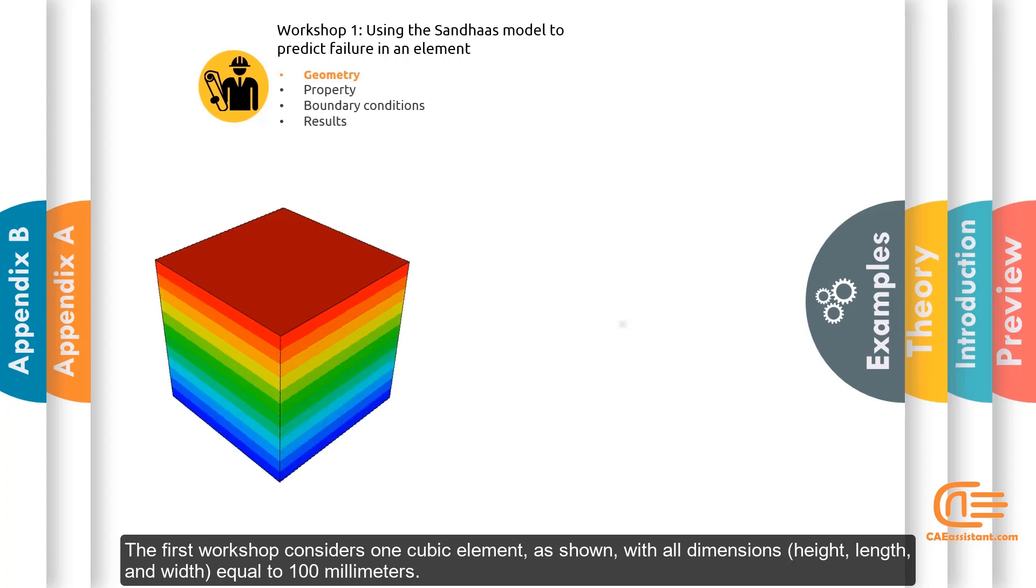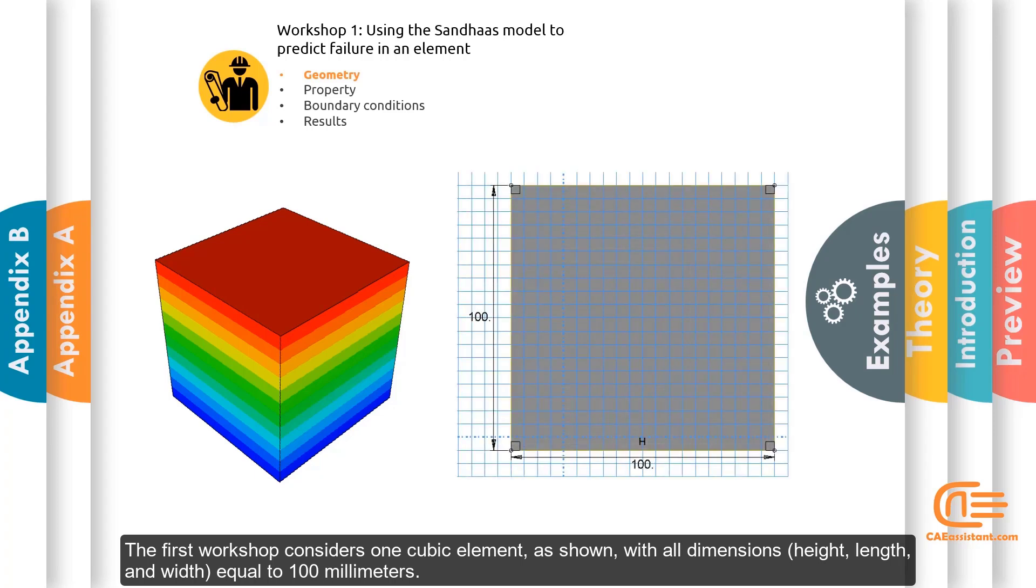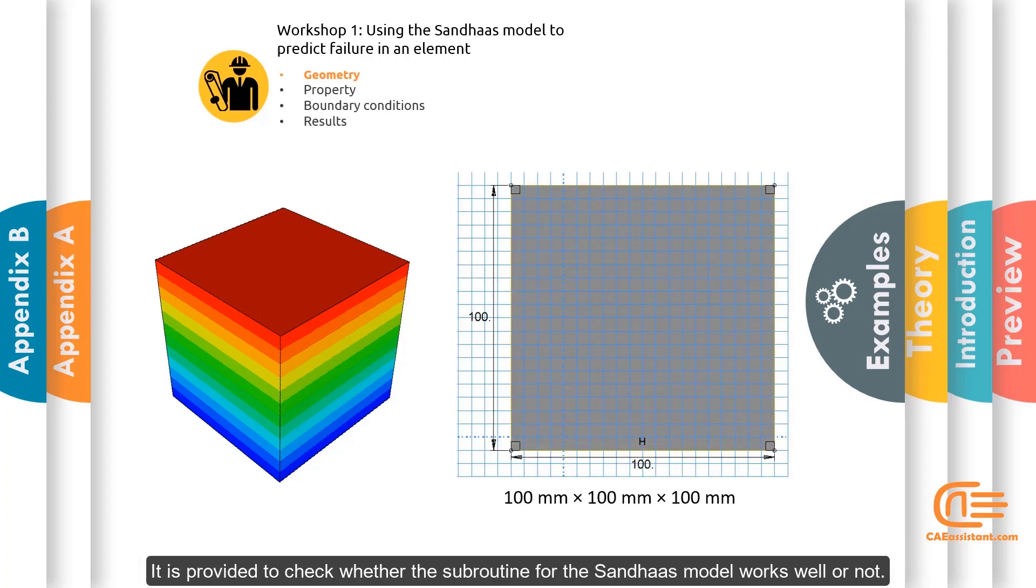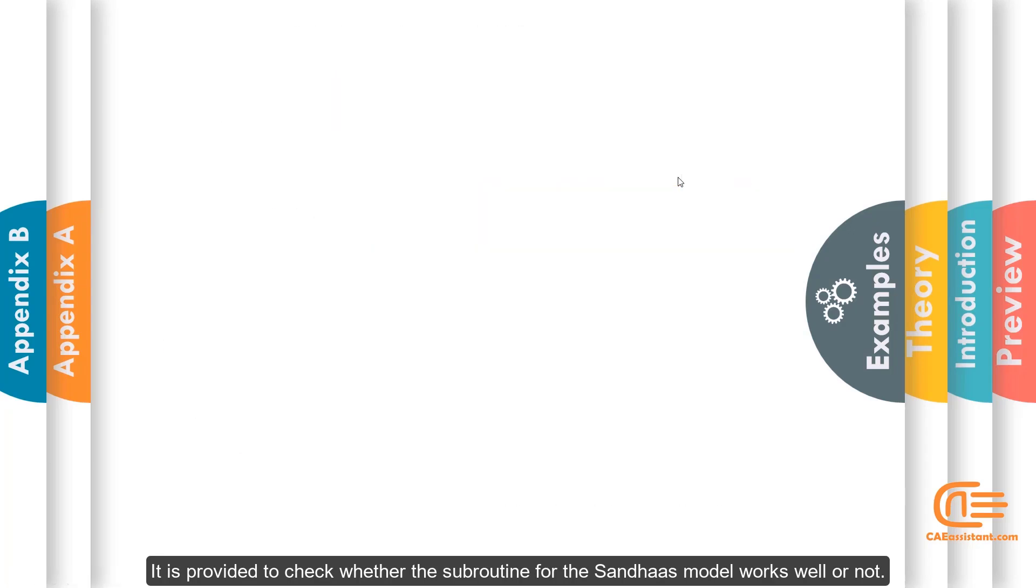The first workshop considers one cubic element as shown, with all dimensions—height, length, and width—equal to 100 mm. It is provided to check whether the subroutine for the Sandhaus model works well or not.